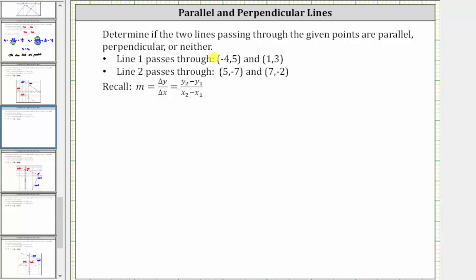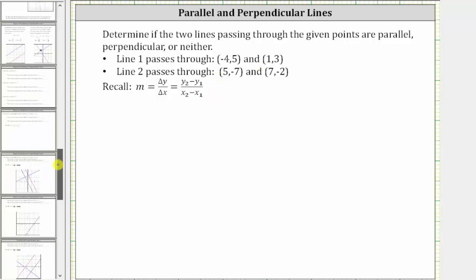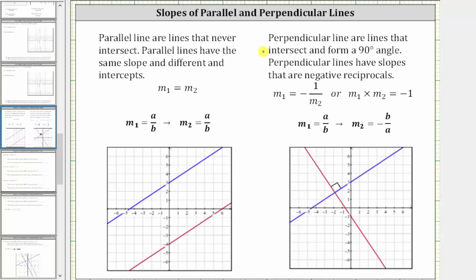We want to determine if the two lines passing through the given points are parallel, perpendicular, or neither. To determine this, we will first determine the slopes of the lines passing through the given points. Then if the slopes are equal, the two lines are parallel, given the two lines are not the same.